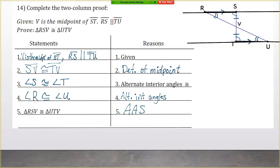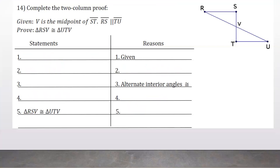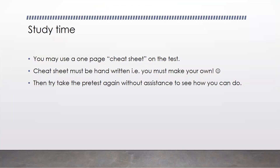There's only one proof on your test. It'll be similar to this where you have some statements given to you and some reasons given to you. You have study time to make your one-page handwritten cheat sheet. Then on the next page, you have the pre-test to take without assistance just to see how you do. If you have questions, let me know.